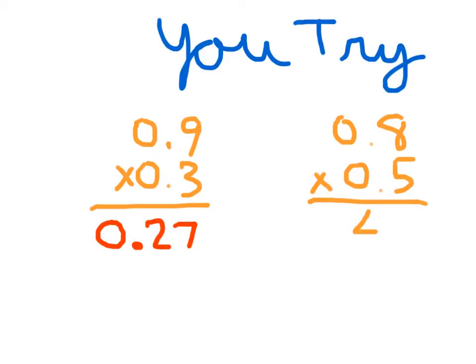5 times 8 is 40. There are two decimal places in the problem, so we write 0.40. I would also accept 0.4 as an answer, since the value of 0.4 is the same as 0.40. 4 tenths does equal 40 hundredths.